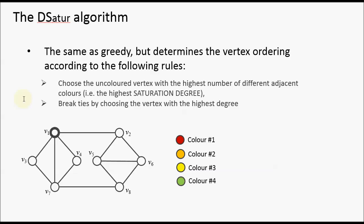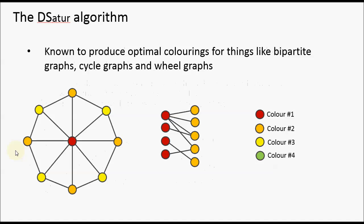At the start, there are no colours assigned to the graph, so we choose the vertex with the highest degree — in this case vertex 1 — and assign it to the first colour. The next vertex chosen is vertex 7, which has a saturation degree of 1 because it's adjacent to one colour. Vertex 3 and vertex 4 also have a saturation degree of 1, so we break ties by choosing the one with the highest degree. Following this process, we colour all of the vertices. In general, the DSatur algorithm produces much better results than the greedy algorithm when the greedy algorithm is applied using a random permutation of the vertices.